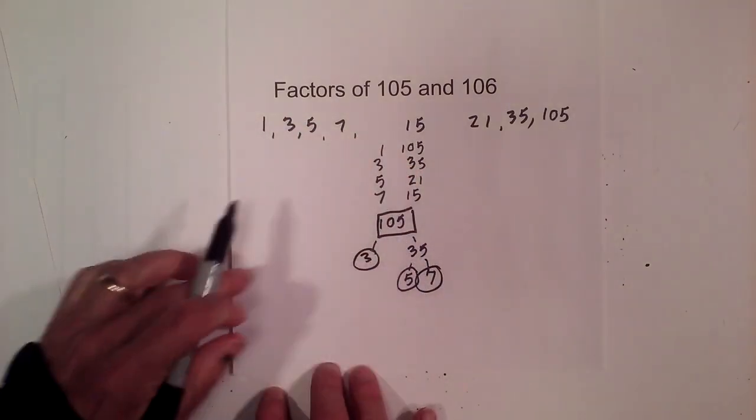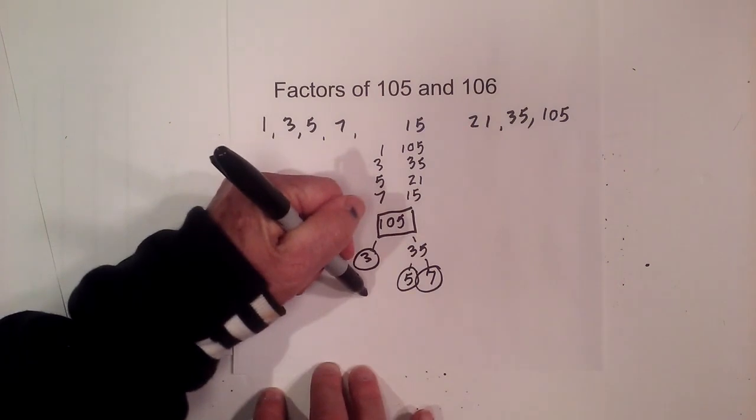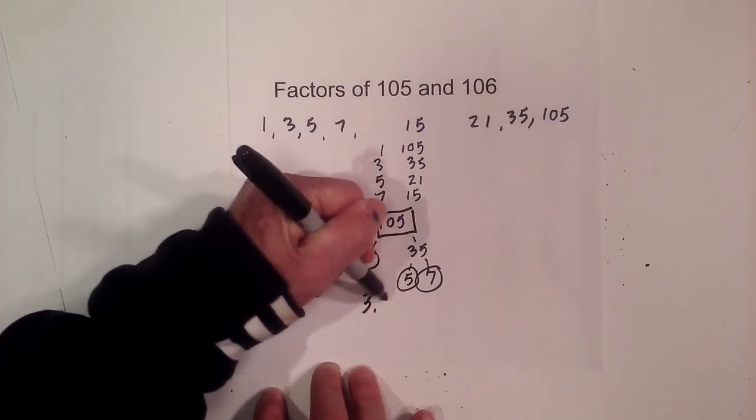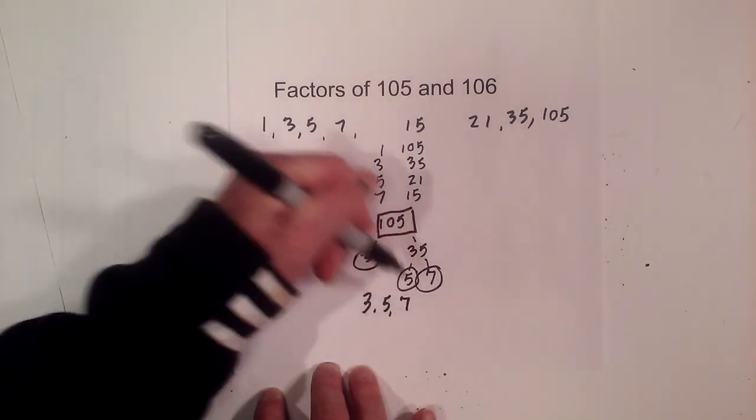I'm now down to prime numbers, so the prime numbers of 105 are 3, 5, and 7.